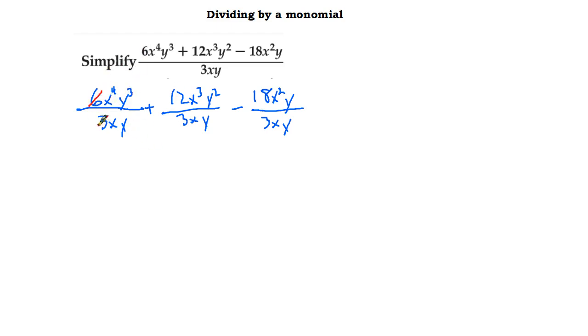The 6 and the 3 can cancel. That gets us 2 and 1. The x to the 4th and the x can cancel. That gets us a 1 down here and it gives us x to the 3rd up here. And then y to the 3rd and y cancel gets me a 1 here and gets me y squared up there. 12 and 3, that's 4. Or x cubed and x, that's x squared. Y squared and y, that gets me y.